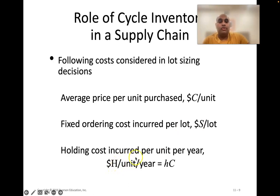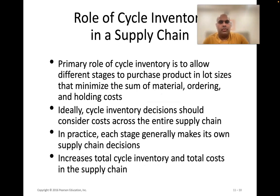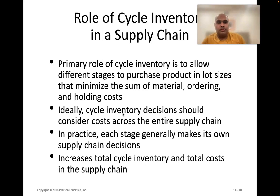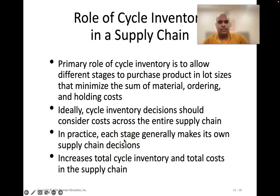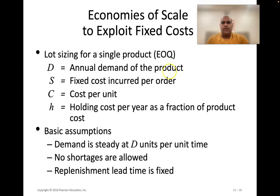So the key parameters are: average price per unit (material cost), fixed ordering cost per lot, and holding cost per unit per year written as h. These are the important costs when making lot size decisions. Ideally, cycle inventory decisions should consider costs across the entire supply chain, but initially we model it from the perspective of a single company. In practice, each stage of the supply chain makes its own decision.